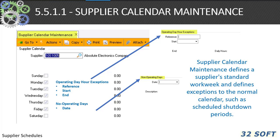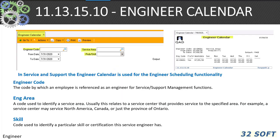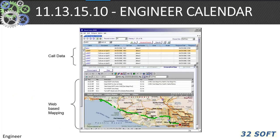Calendars are also used in scheduling for customer plan schedules, customer ship-to, and required ship schedules. In 5.5.1.1 supplier calendar maintenance, this defines a supplier's standard work week and defines exceptions to that normal calendar such as scheduled work periods. This may need to be updated frequently as suppliers also need to schedule their own operations. 11.13.5.10 engineering calendar in service and support is used for engineering scheduling functions, defining the engineer code, engineer area, and skills associated with the engineer.